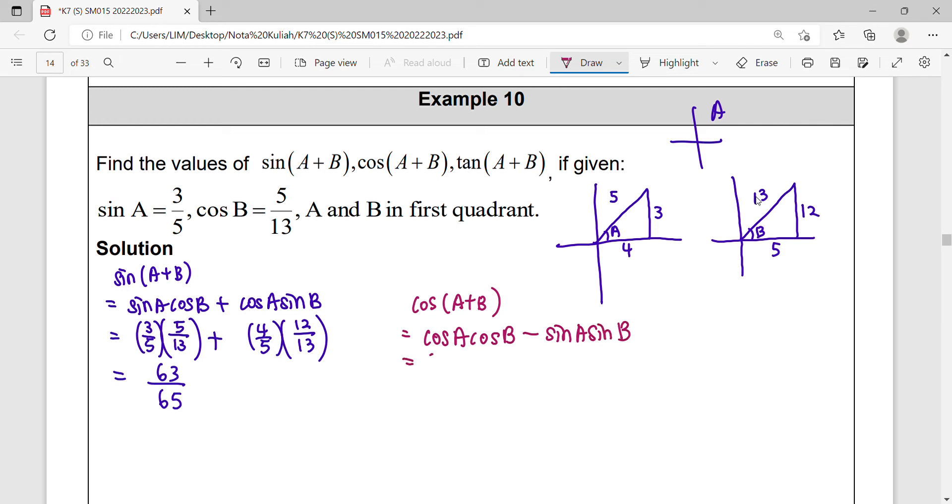Okay, so plug in your value. Cos A, adjacent 4 over 5. For angle B, cos B 5 over 13. Then back to angle A, you want sine opposite over hypotenuse, 3 over 5. Then sine B, 12 over 13.